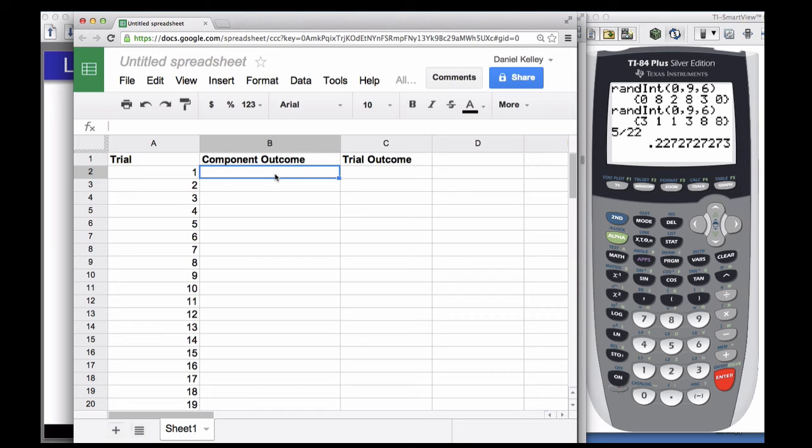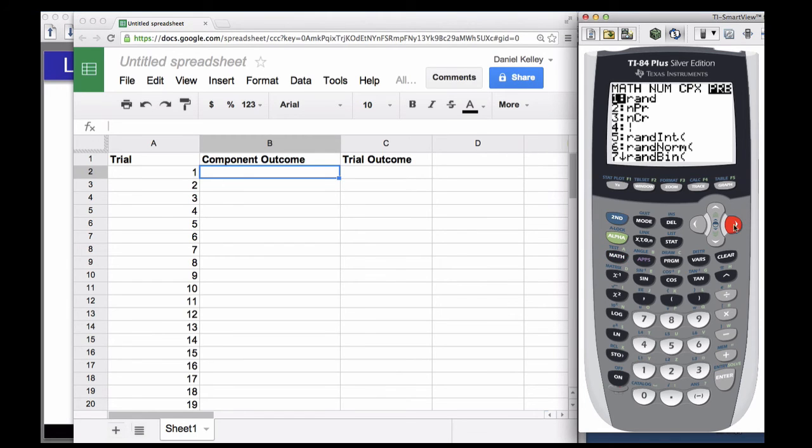So we've got six components per trial and I'm going to do randint again but this time I'm going to say from 1 to 4 and 6 at a time. Okay, that gave me a 2, 3, 2, 4, 2, 2.